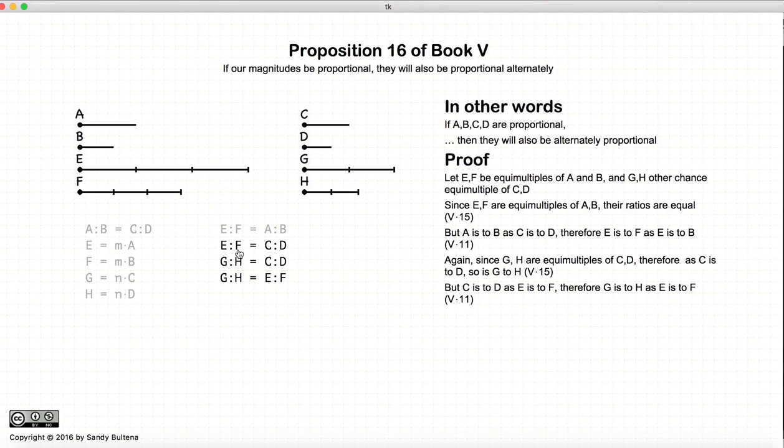We have E to F is equal to C to D. C to D is equal to G to H. So therefore, E to F and G to H are both equal. So these two ratios are both equal.